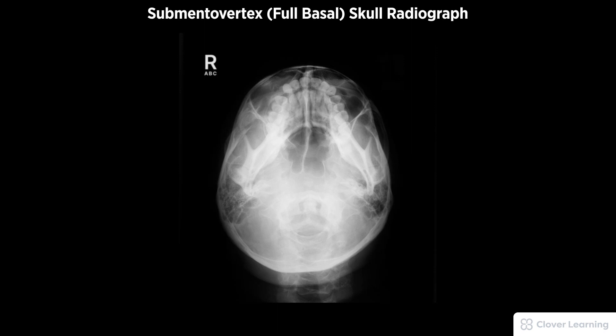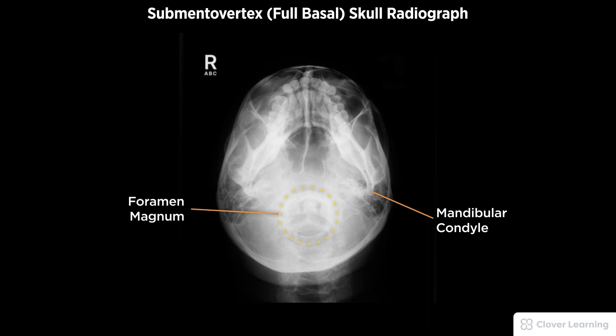A diagnostic submental vertex view of the skull, also known as the full basal radiograph, must be free of motion and rotation. Demonstrated anatomy must include symmetrical mandibular condyles, foramen magnum centered, and proper visualization of soft tissue and bony detail.